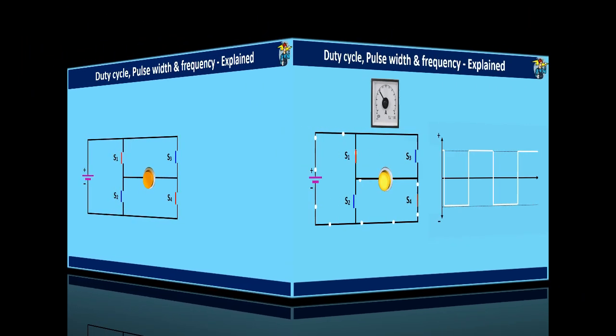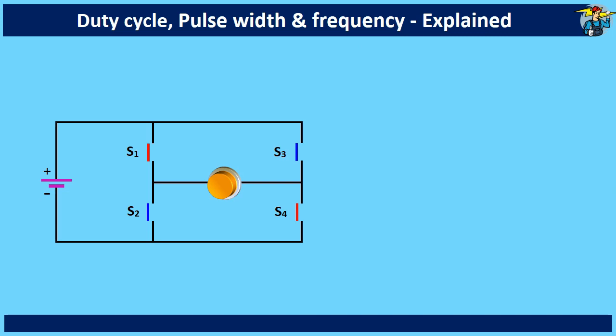First, let's look at how the voltage across a load can be reversed when using a DC supply. This is an H-bridge, an electronic circuit that changes the polarity of a voltage applied to a load. The name is derived from four switching elements configured as the branches of the letter H, and the load is connected as the crossbar.